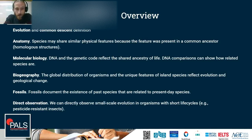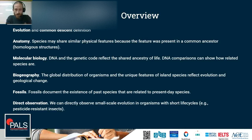Quick overview of the topic. We will talk about the definitions of evolution and common descent, and then we will have a look at the different forms of evidence found over the past centuries that give us evidence for the theory of evolution and common descent. These include anatomical features of organisms where species share similar physical features, and molecular biology — the DNA and genetic code that reflects shared ancestry of life, and how DNA comparisons can show how related species are.